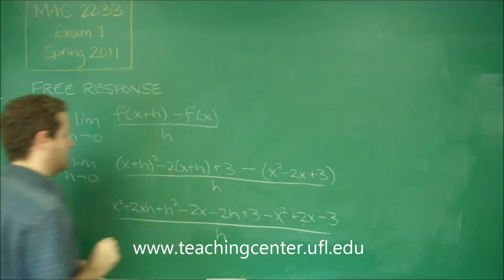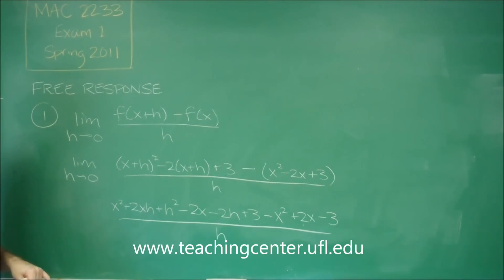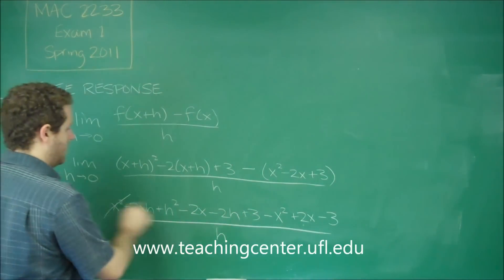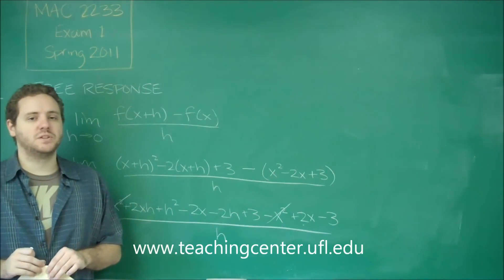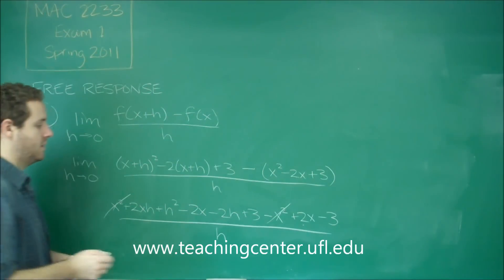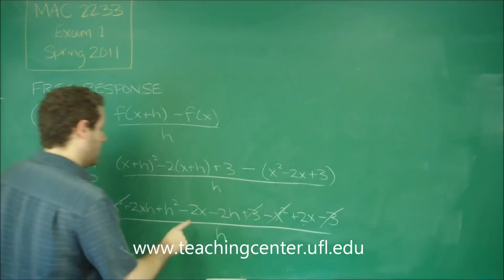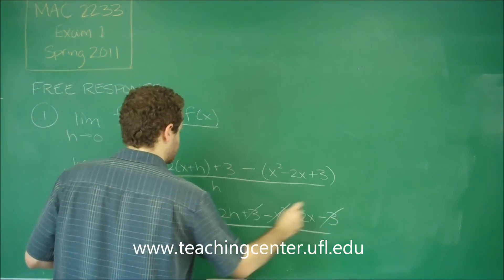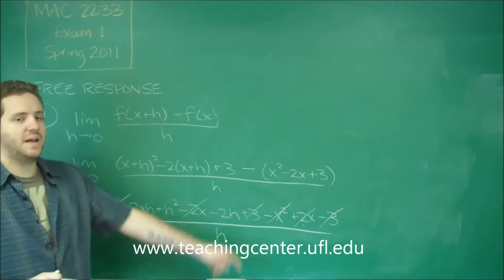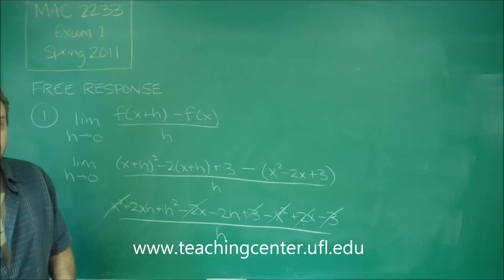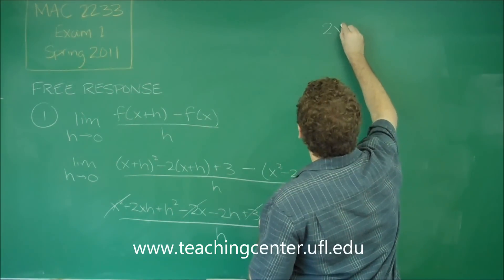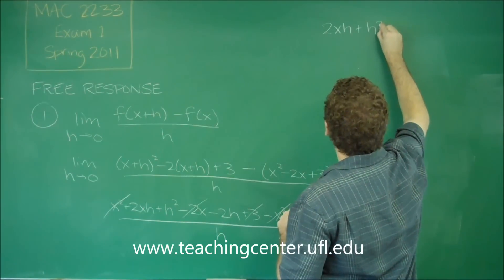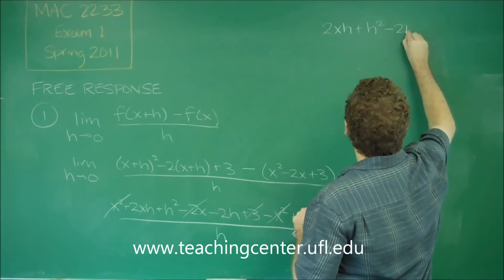So everything is distributed and expanded as much as we can. Let's see what cancels out. x squared minus x squared, that cancels out. You should be wary that pretty much everything that doesn't have an h should be cancelling out here. Plus 3 minus 3, minus 2x plus 2x. If you notice, everything that's left has an h, that's how it should always work out. So keep that in mind when you're doing these problems. You should end up having everything that has h is left over. So we get 2xh plus h squared minus 2h left over.